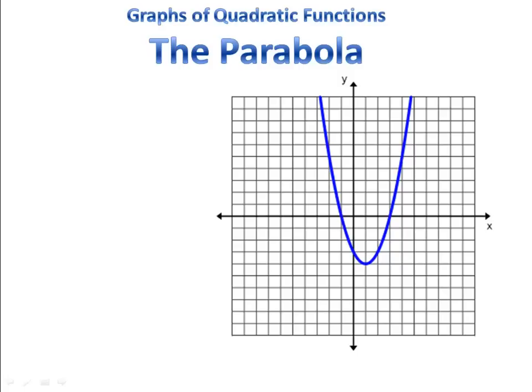Let's take a look at some of the special features of the parabola. Notice we have this point right down at the bottom. We call that the turning point or the vertex. It's called the turning point because it's where the parabola changes direction.